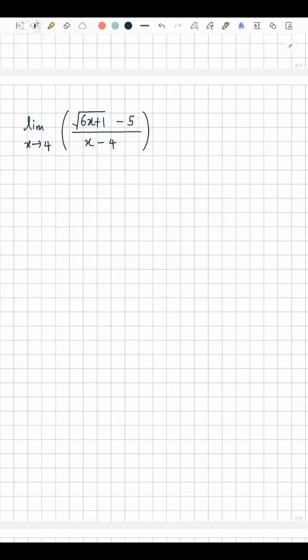Hi everyone, so I'm going to do this limits question for you guys. So to do this, you'll have to multiply the numerator and denominator by the conjugate of root 6x plus 1 minus 5. So you multiply the numerator and denominator by the conjugate.